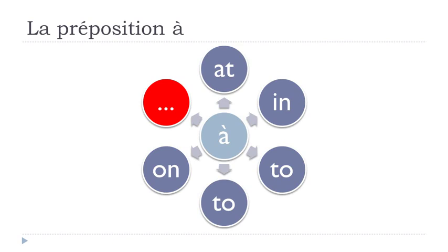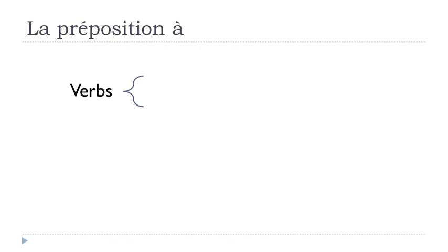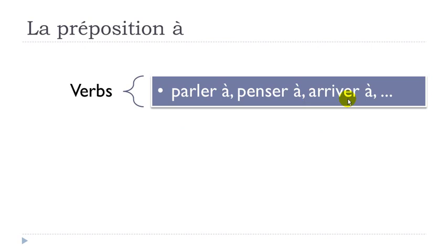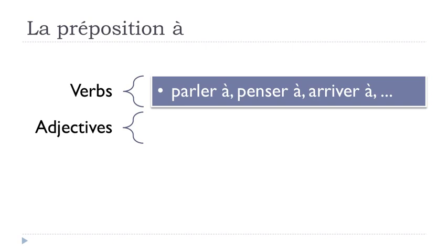Let's see all the other possibilities. With verbs — and these are just examples, because there are many verbs that require this preposition À: 'parler à' (to talk to), 'penser à' (to think about someone or something), 'arriver à' (to succeed in doing something). You should use preposition À with these verbs. Students normally remember these verb-preposition combinations little by little, and when you encounter a new verb with a preposition, try to write it down and memorize it.